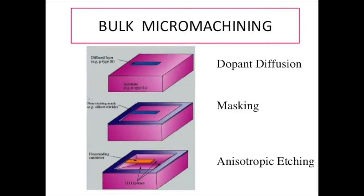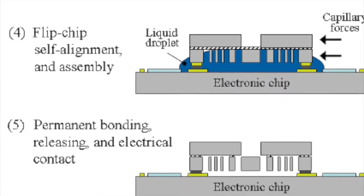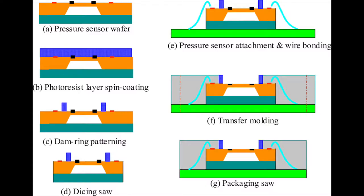There are three main ways to make MEMS. There is bulk micromachining, which removes chunks to make holes and patterns in material. There is surface micromachining, which adds on layers of film to create pieces. And there are molds, where molds of a part are created and a material is pressed or poured into the mold.